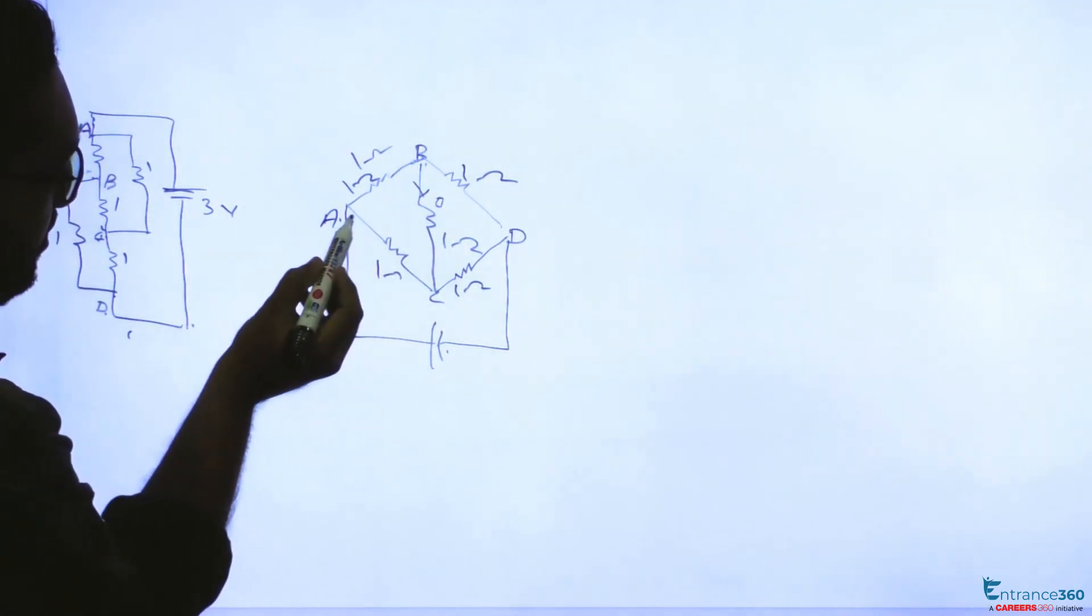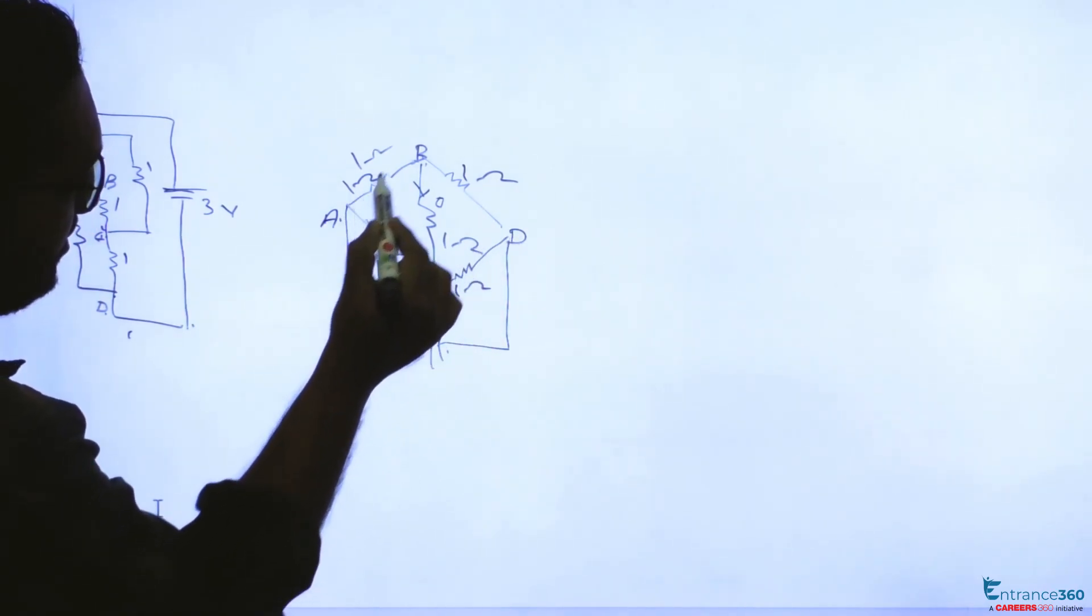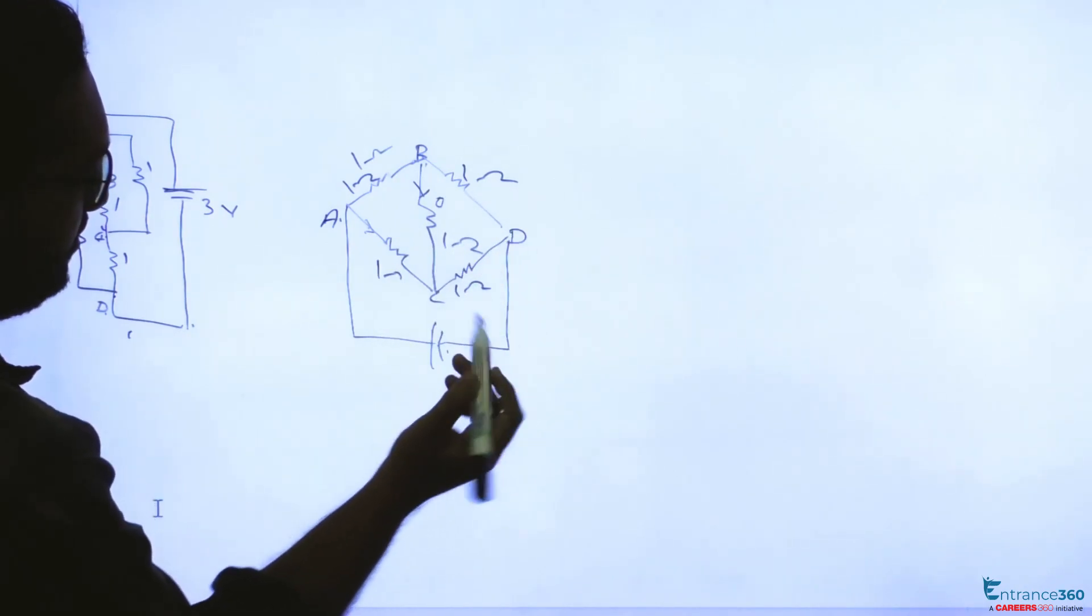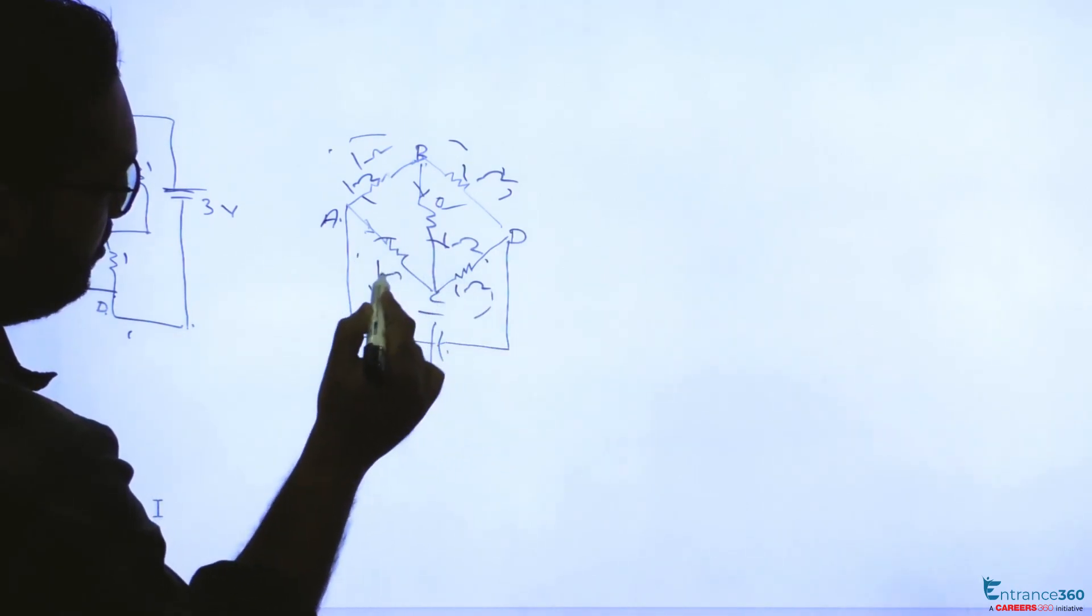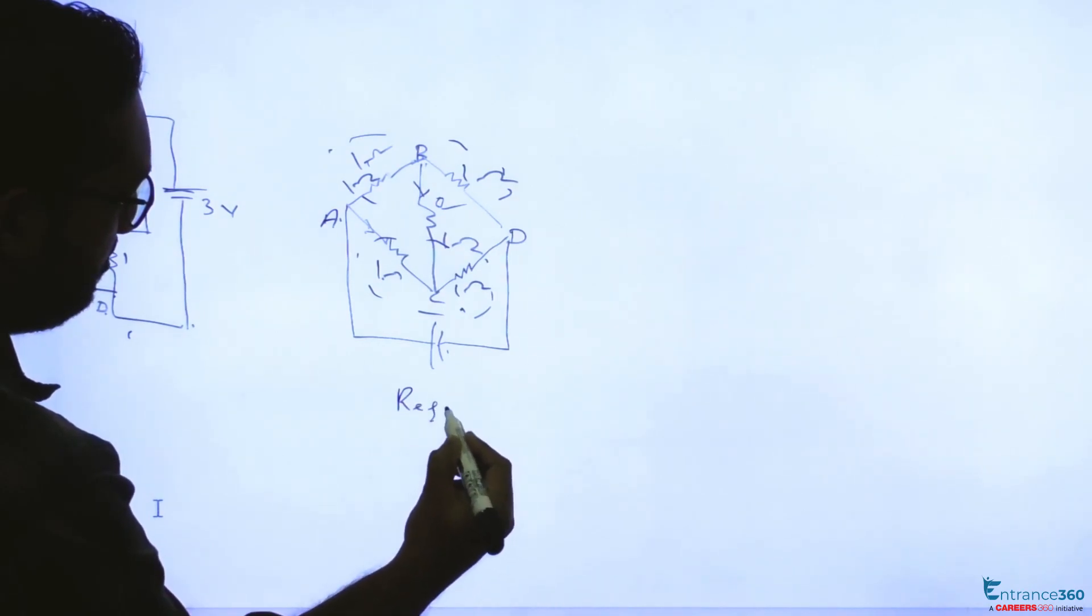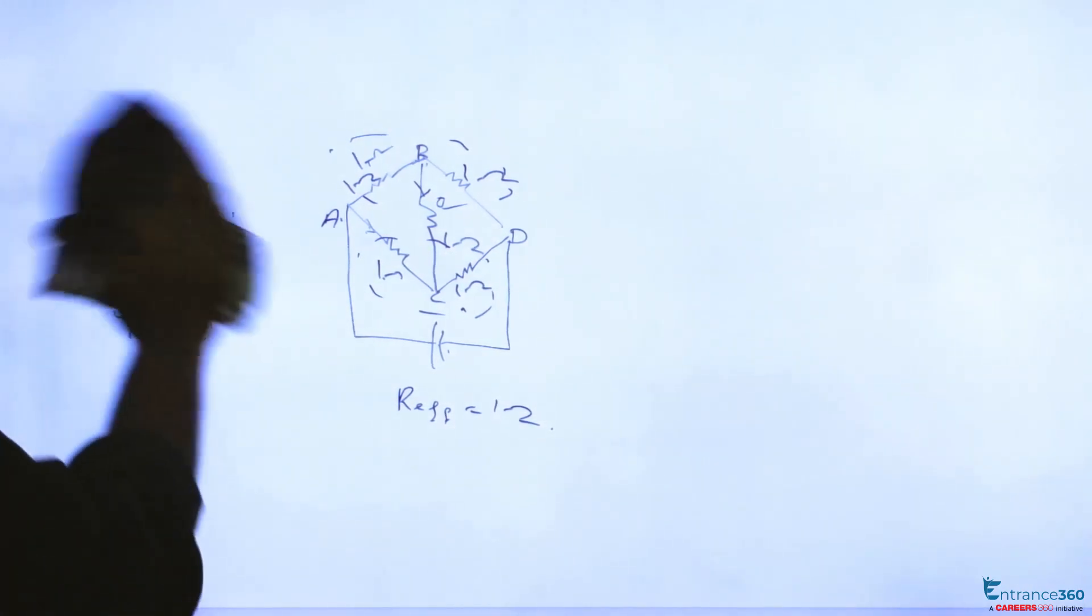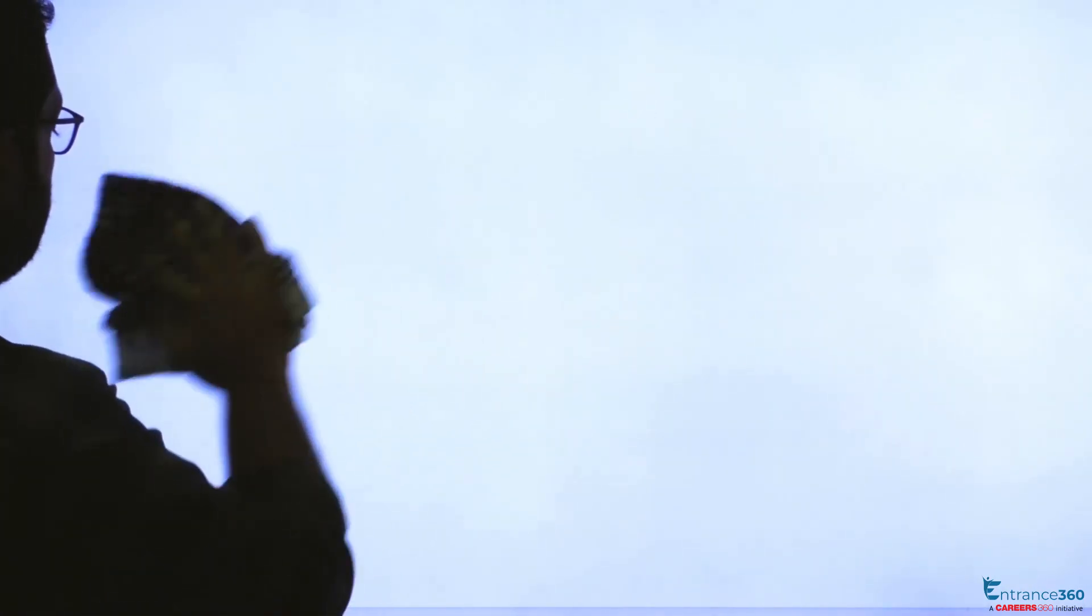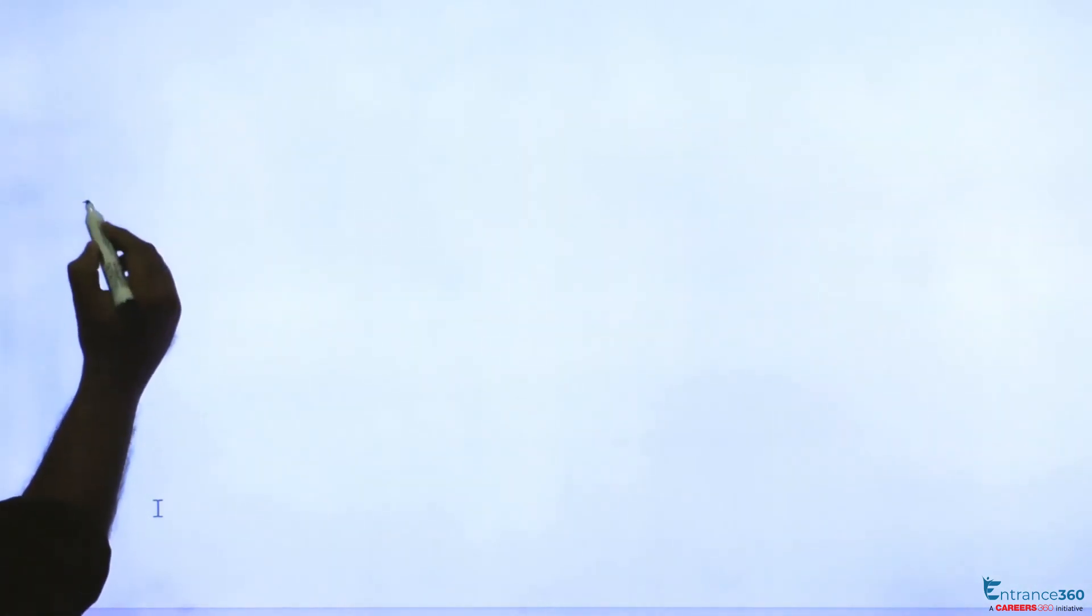These two branches are in series and these two branches are in series. So net of this is parallel to this one. It is 2 ohm parallel to 2 ohm. So effective resistance is one ohm. Effective resistance of our first circuit is one ohm, R effective equals one ohm for first circuit.